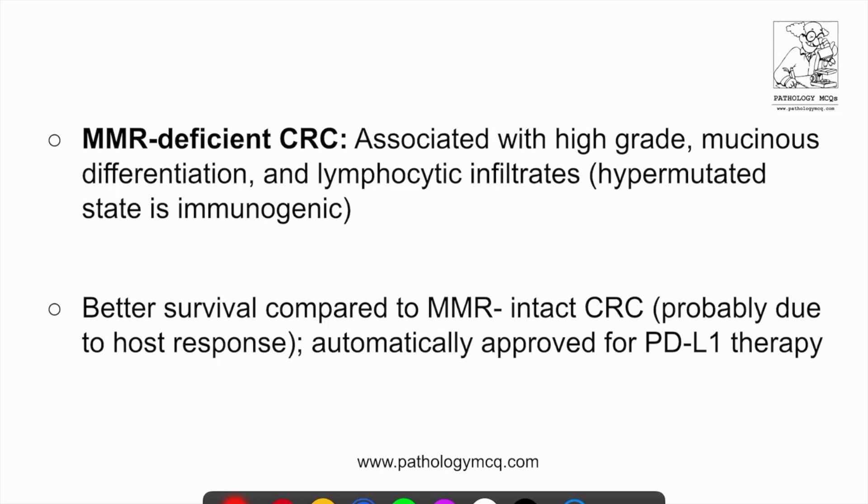So what is the significance of identifying all these things? The significance of identifying all these things is that MMR deficient colorectal carcinomas are associated with high grade morphology, less differentiation, and most importantly, lymphocytic infiltrates surrounding the tumor, which means that there is an immunogenic state. But because of some reason, this immunogenicity is not being put into effect.